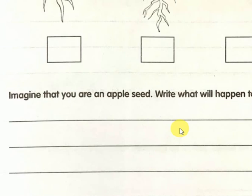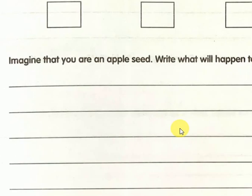To conclude: seeds need water, air, sunlight, and soil to grow into a plant. Read content book page number nine, and do workbook page 15. Tomorrow we will meet. Bye, take care. Thank you.